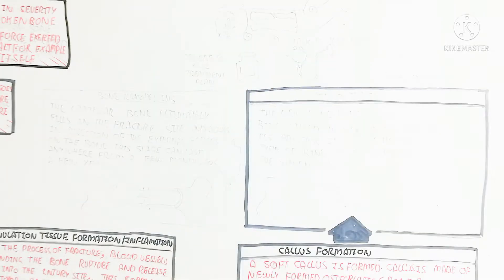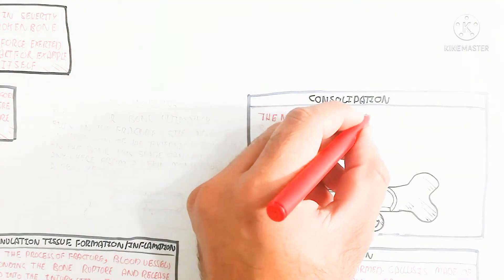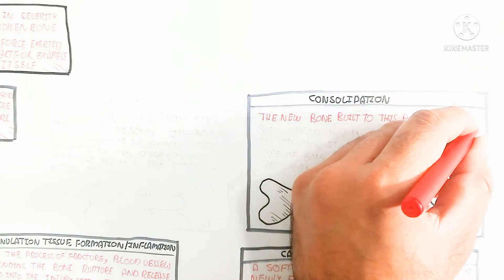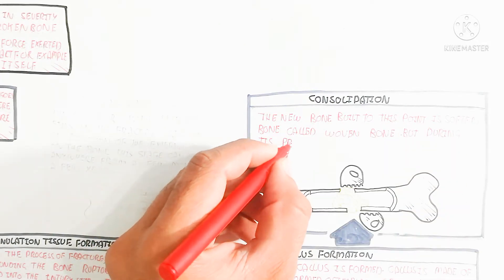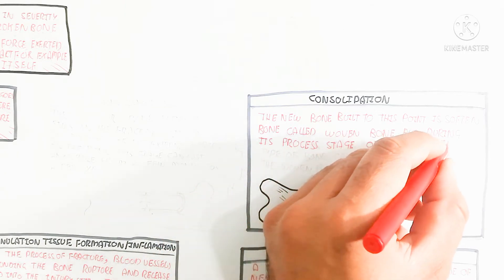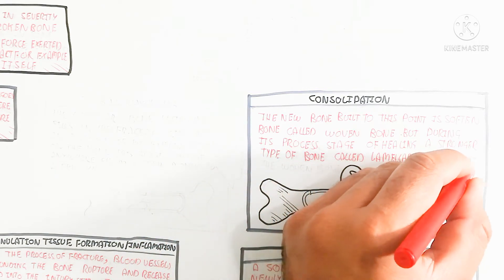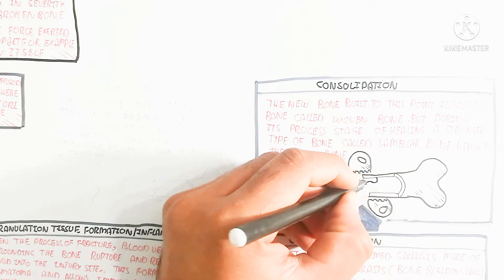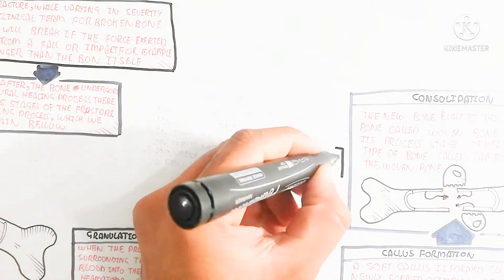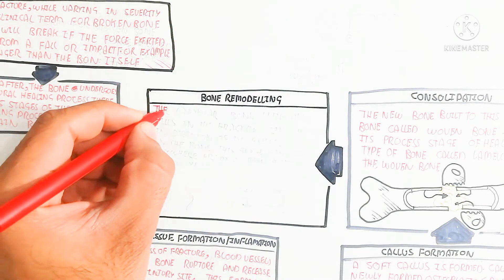The next step is consolidation. The new bone built at this point is soft, called woven bone, because it has a network-like structure. During the healing process, a stronger type of bone called lamellar bone replaces the woven bone — the woven bone disappears and the lamellar bone forms. Continuous deposition of calcium and phosphate results in a hard bone.